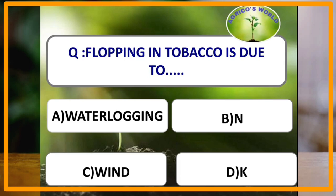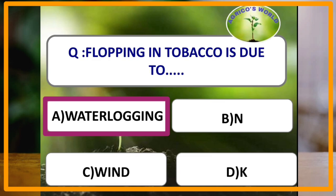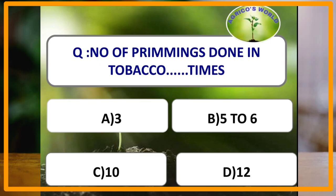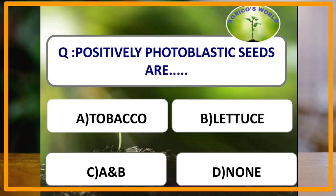Flopping in tobacco is due to waterlogging followed by bright sunshine hours. The harvesting method adopted in desi tobacco is priming, and in nicotiana rustica the method adopted is stalk cutting. The number of primings done in tobacco is five to six times. Positively photoblastic seeds include tobacco and lettuce.